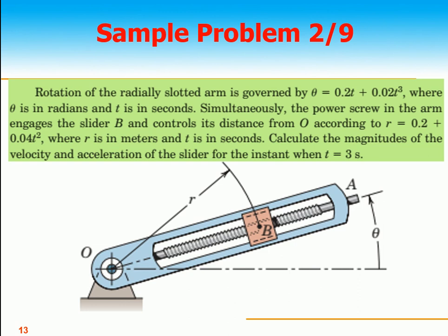We have developed the equations for velocities and accelerations in r-theta coordinates. Let's solve Sample Problem 2-9 from the 7th edition of JL Merriam. Rotation of the radially slotted arm is governed by θ = 0.2t + 0.02t³, where θ is in radians and t is in seconds. The power screw controls the slider's distance from O according to r = 0.2 + 0.04t², where r is in meters and t is in seconds. Calculate the magnitude of velocity and acceleration of the slider at t = 3 seconds.